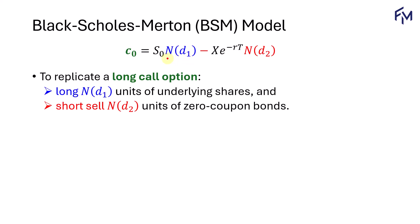This is based on the standard normal distribution for the cumulative probability. Then we minus the exercise price or the strike price, multiplied by E, the exponential function, of negative R, the risk-free rate, multiplied by T, the remaining time to maturity of the option, then we multiply by N of D sub 2. So S sub 0 represents the underlying shares, and the X component — the PV of the strike price — represents the zero coupon bonds.